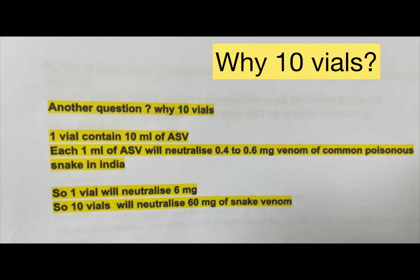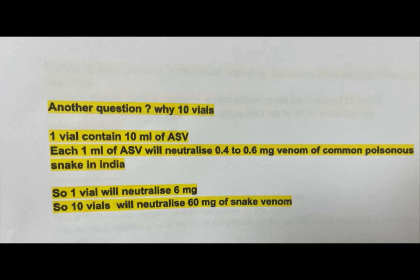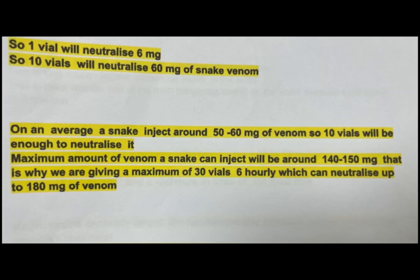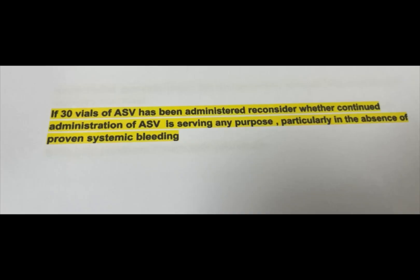Why start with 10 vials? One vial contains 10 ml of ASV; each ml neutralizes 0.4 to 0.6 mg of venom from common poisonous snakes in India, so one vial neutralizes approximately 6 mg. Ten vials neutralize 60 mg of venom; on average a snake injects 50 to 60 mg. Maximum venom a snake can inject is 140 to 150 mg, hence we give a maximum of 30 vials — which can neutralize up to 180 mg. If 30 vials have been administered, reconsider whether further ASV is serving any purpose, particularly in the absence of proven systemic bleeding.